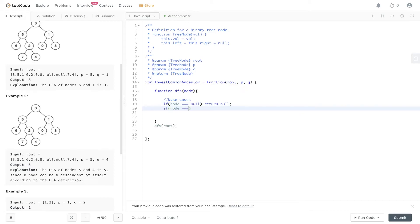If node is equal to P or node is equal to Q, we can return that node just to signal to the parent that we've found one of the nodes. Then we traverse down the left side of the tree, node.left, then the right side of the tree.